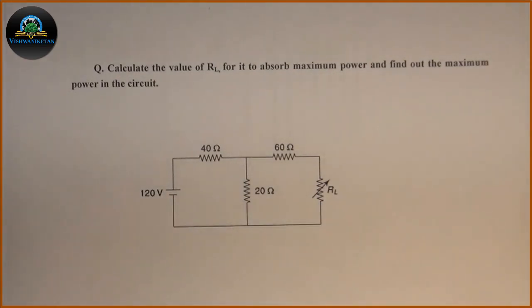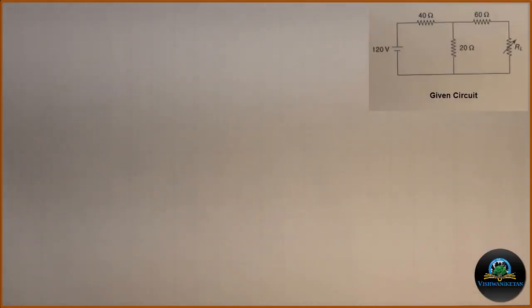Let us start the problem. The first step of the problem will be, according to Maximum Power Transfer Theorem, maximum power will be transferred from circuit to the load RL when RL is made equal to equivalent resistance, which is Thevenin's resistance RTH across terminals A and B.